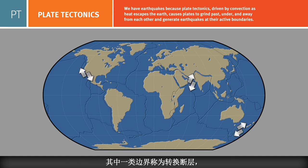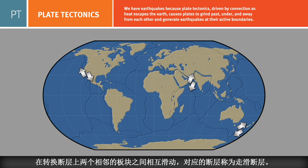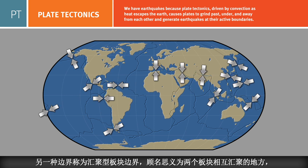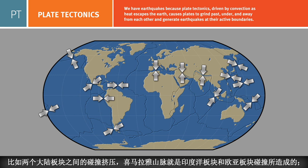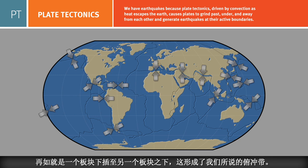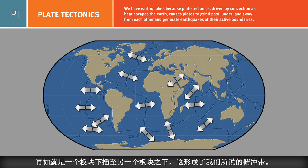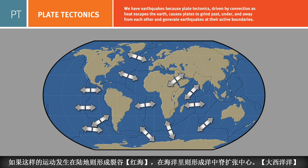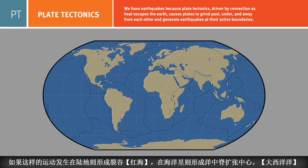At transform boundaries, plates slide past one another and form strike-slip faults. At convergent boundaries, continents collide and form mountains, or one plate slides beneath another and forms a subduction zone. At divergent plate boundaries, plates move apart and form rifts within continents, or mid-ocean ridge spreading centers in the oceans.